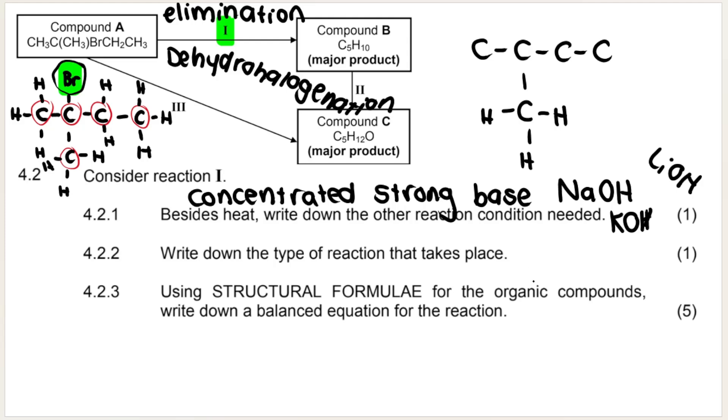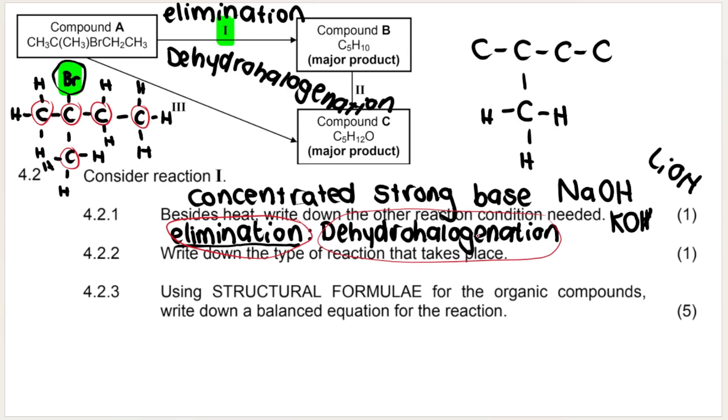Write down the type of reaction that takes place. We already said that would be an elimination reaction. And more specifically, so I always go broader first. So when I say broader, I mean out of addition, elimination, and substitution, which one is it? Write the broad type first, and then I can be more specific. Dehydrohalogenation. So I'm just putting both there as my answer. But according to this memo, you could have said either elimination or dehydrohalogenation.